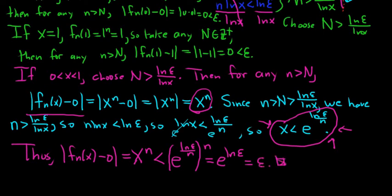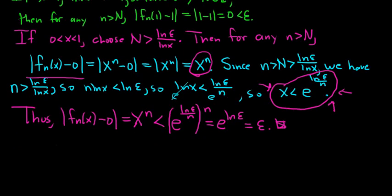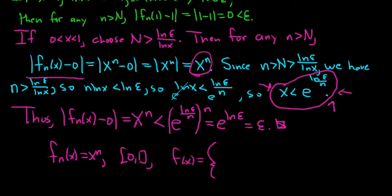So that was quite a bit of work — almost 12 minutes! To recap: our sequence f sub n(x) = x^n converges point-wise on [0, 1] to the function f(x) = 0 if x is in [0, 1) and f(x) = 1 if x = 1.